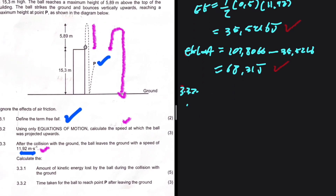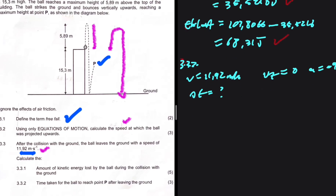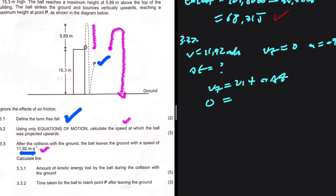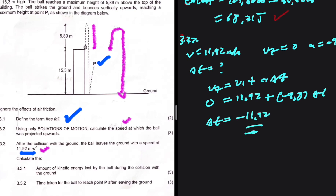The ball leaves the ground with a velocity of 11.92 meters per second upwards. At point P — maximum height after striking the ground — VF equals zero, and acceleration is minus 9.8 meters per second squared. We are interested in delta T. Using VF = VI + A·ΔT: 0 = 11.92 + (−9.8)·ΔT. So delta T = −11.92 ÷ −9.8 = 1.22 seconds. That is 3.3.2.